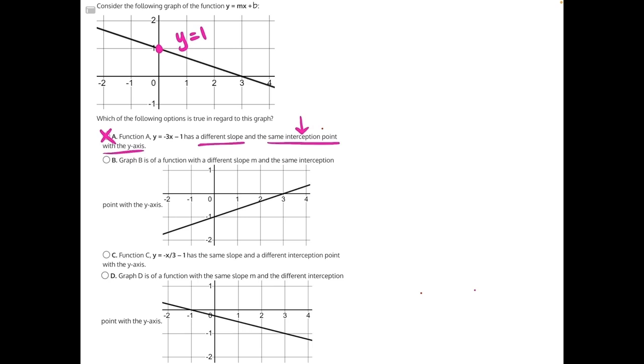For answer choice B, graph B is of a function with a different slope m and the same interception point with the y-axis. Again, this is not true. This interception point is at y equals negative 1, not at y equals positive 1. So that means B is also incorrect.